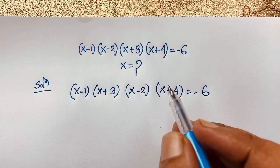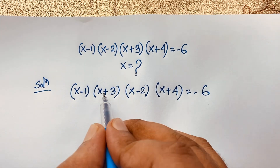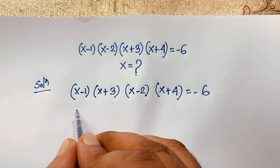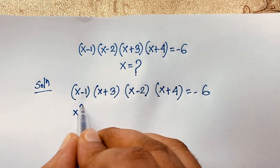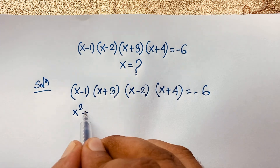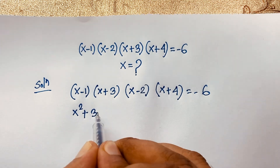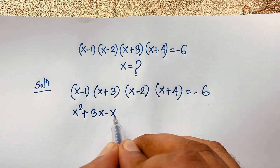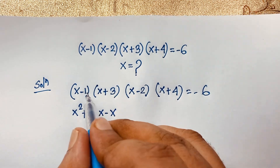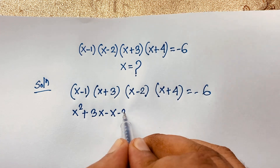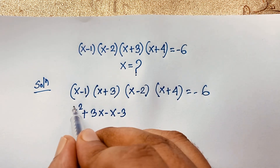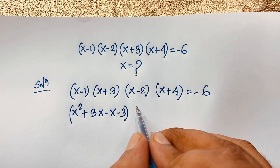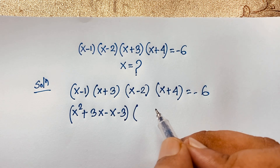Now expanding the first bracket: x times x is x squared, x times 3 is 3x, negative 1 times x is negative x, and negative 1 times 3 is negative 3.